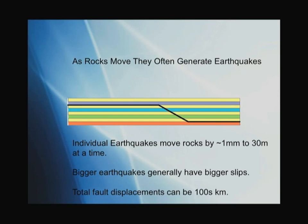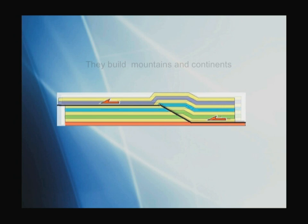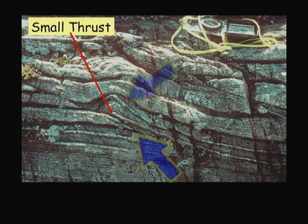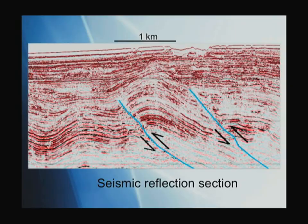Individual earthquakes may move rocks around by only a few millimeters up to thirty meters. If you're near a thirty-meter-slip earthquake, that's a bad thing — those are magnitude 8s or 9s. Big earthquakes have bigger slips, and total fault displacement can be hundreds of kilometers, meaning an awful lot of earthquakes during the life cycle of a very big fault zone. They also build mountains and continents. There are multiple earthquakes going on just to move each piece of rock around. Here's a little thrust fault — here's a little ramp anticline. All these types of things form during earthquakes.